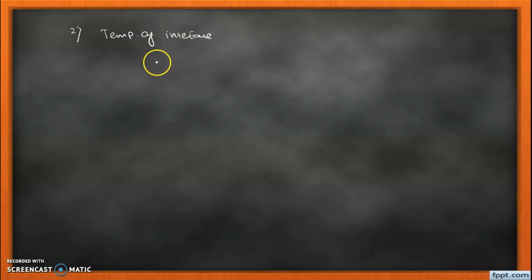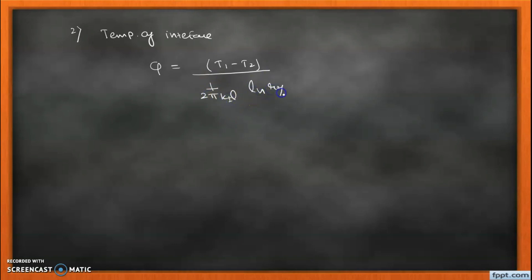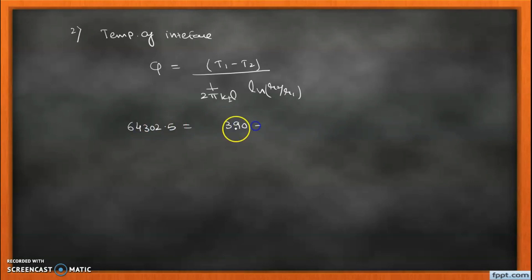Now we calculate the interface temperature T2. Applying the heat flow equation for the first layer only: Q = (T1 − T2) / R1 = (T1 − T2) / [(1 / 2πk1L) · ln(r2/r1)]. We know Q = 64,302.5 W, T1 = 390°C, k1 = 0.092, L = 210, r2 = 170, r1 = 120.